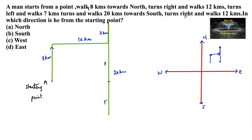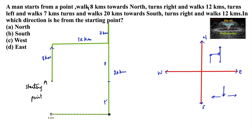And then he turns right and walks 12 km. Now he is in the direction of south. You have to understand: when the person is facing south, what feels like the right side to us is actually his left. So taking the right side means he is moving towards the west direction for 12 km. That 12 km is exactly opposite, and we can mark this final position as B.